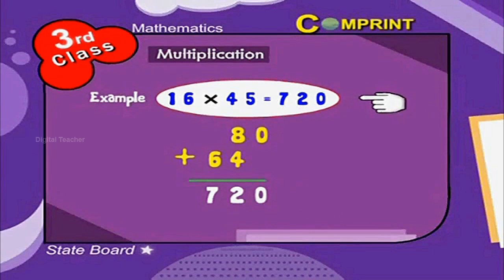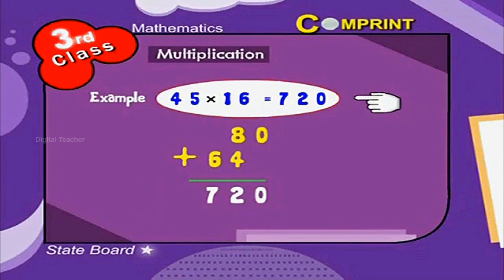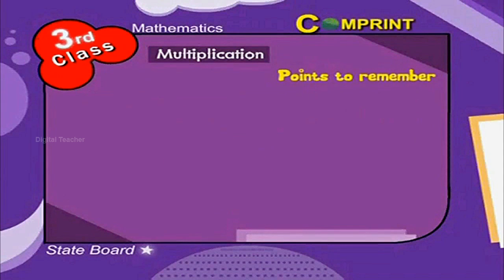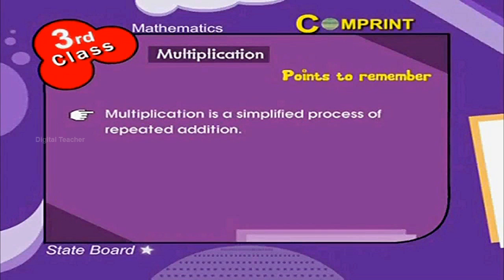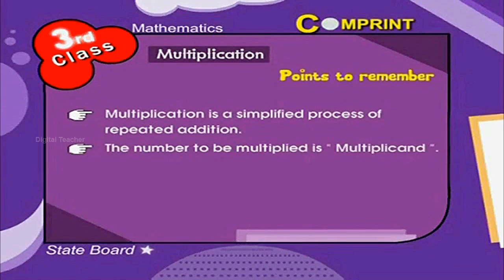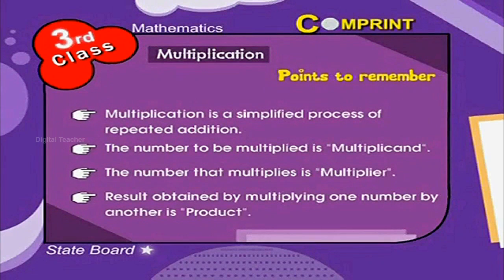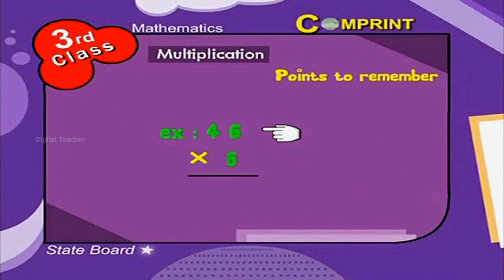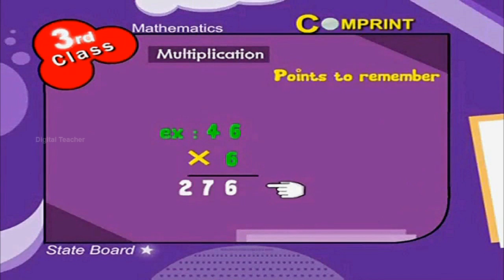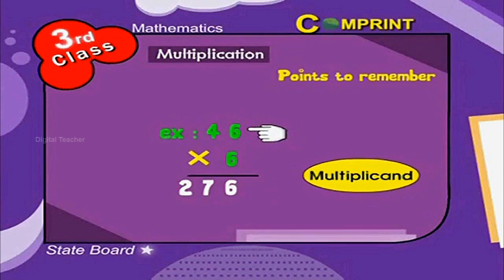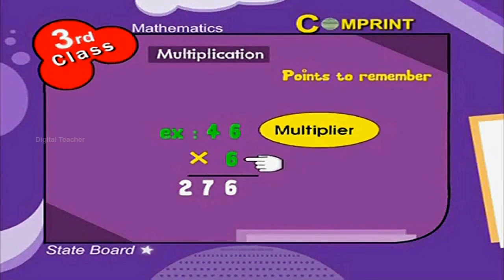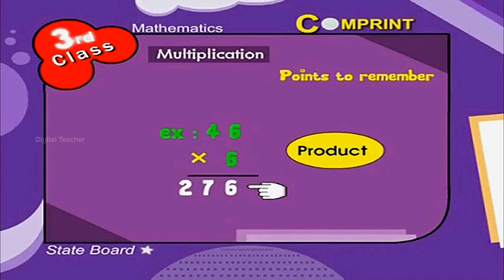16 into 45 is equal to 45 into 16, that is equal to 720. Points to remember: Multiplication is a simplified process of repeated addition. The number to be multiplied is the multiplicand. The number that multiplies is the multiplier. The result obtained by multiplying one number by another is the product. For example, 46 into 6 is equal to 276; here, 46 is the multiplicand, 6 is the multiplier, and 276 is its product.